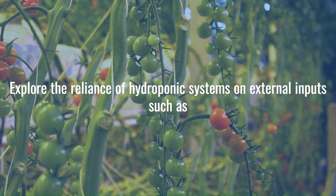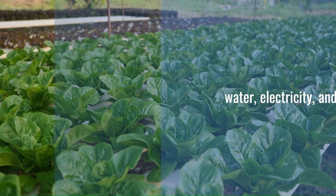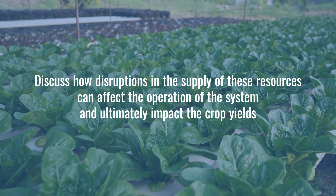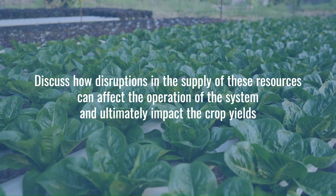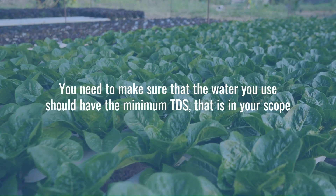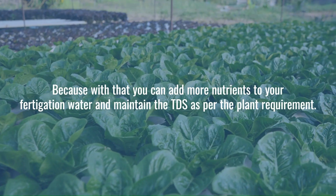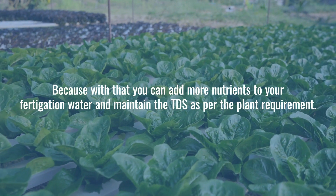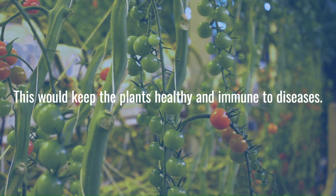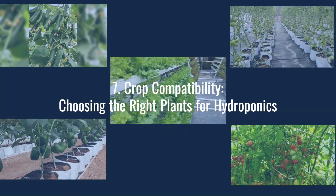The sixth drawback is input dependency — the lifelines of hydroponic systems. Hydroponic systems rely on external inputs such as water, electricity, and nutrient solutions. Disruptions in the supply of these resources can affect system operations and ultimately impact crop yields. You need to make sure the water you use has minimum TDS within your scope, so you can add more nutrients to your fertigation water and maintain TDS as per plant requirements, keeping plants healthy and immune to diseases.